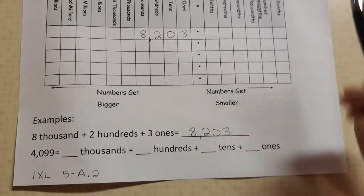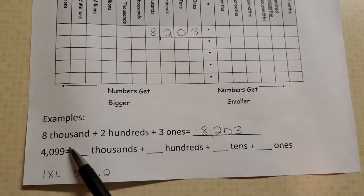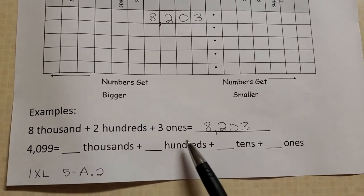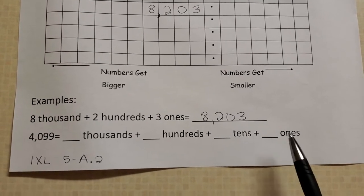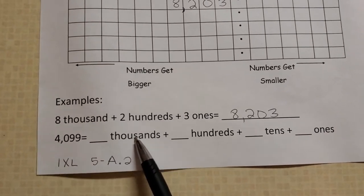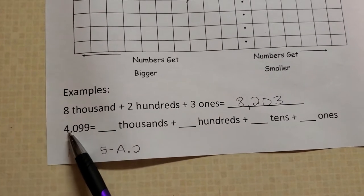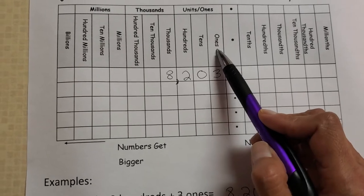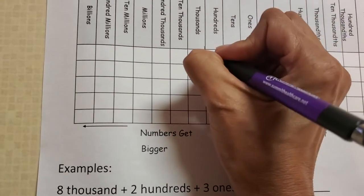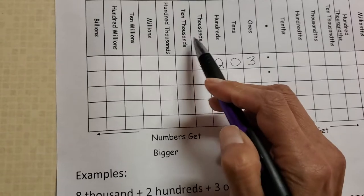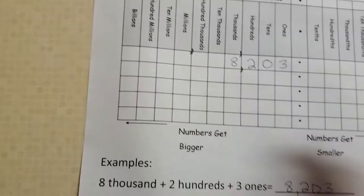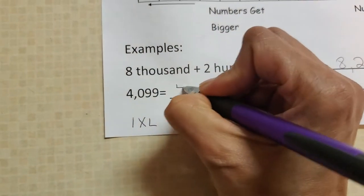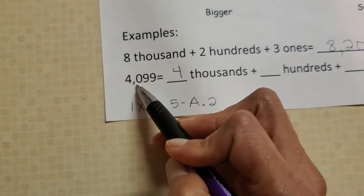All right, next example. It gives you the standard form, now wants you to write how many thousands, how many hundreds, how many tens, and how many ones. So let's take a look here. Thousands - this is the thousands position right after that comma, right there. Remember, one, two, three, if you're looking up here this is where the comma goes. So there are 4 thousands, 0 hundreds.